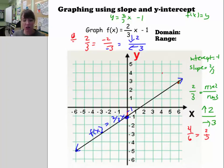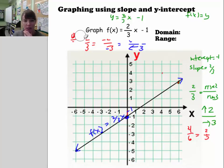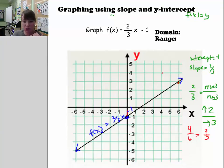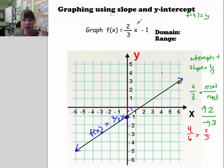For the domain and range of a standard linear function: the domain is all the possible x-values you can put into the function. Whenever you're asked the domain, figure out if there are any restrictions — any numbers that, when substituted for x, make the function undefined. For this one, the answer is no. You can put in any value of x, rational or irrational, because you can always multiply by 2/3 and subtract 1.